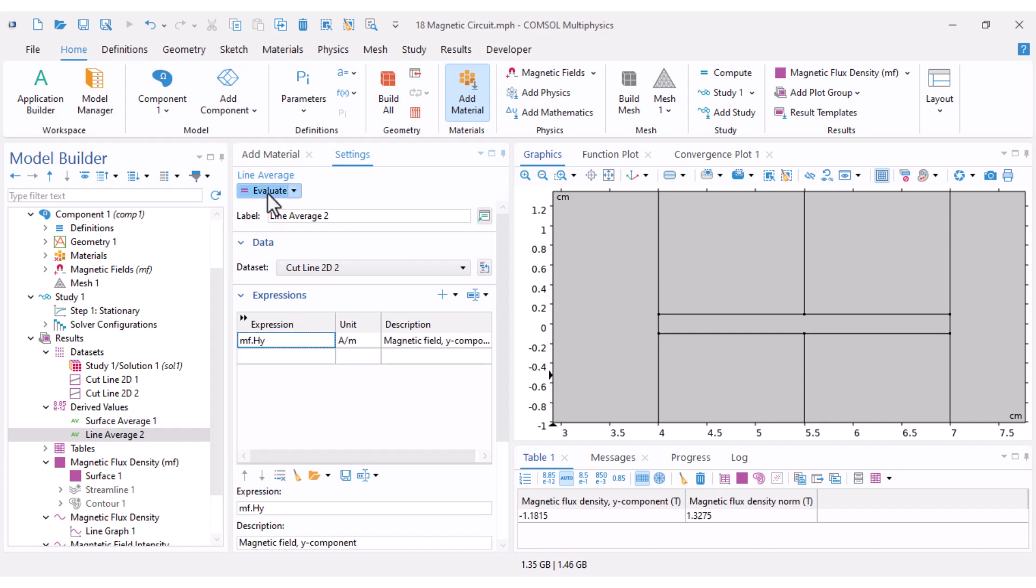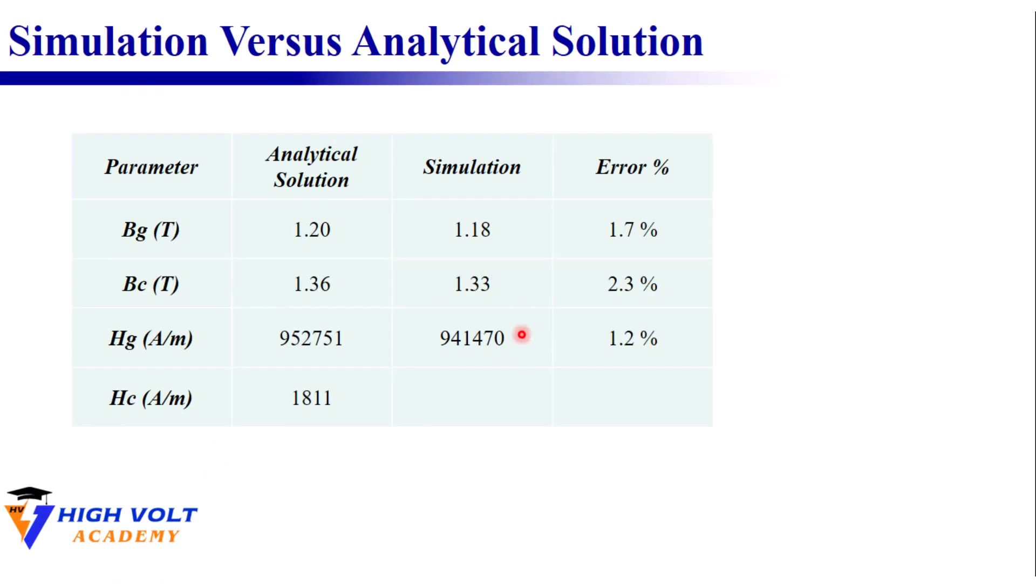I select my second cut line and type mf.Hy and click Evaluate. When I plug it into our comparison table the difference between simulation and analytical result is only 1.2 percent.